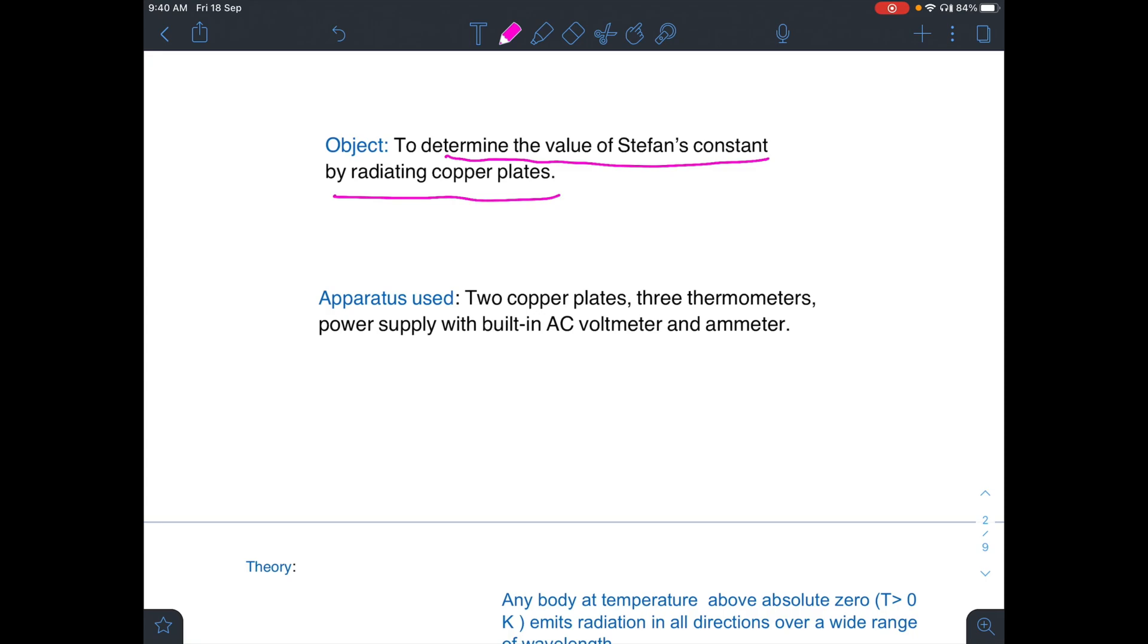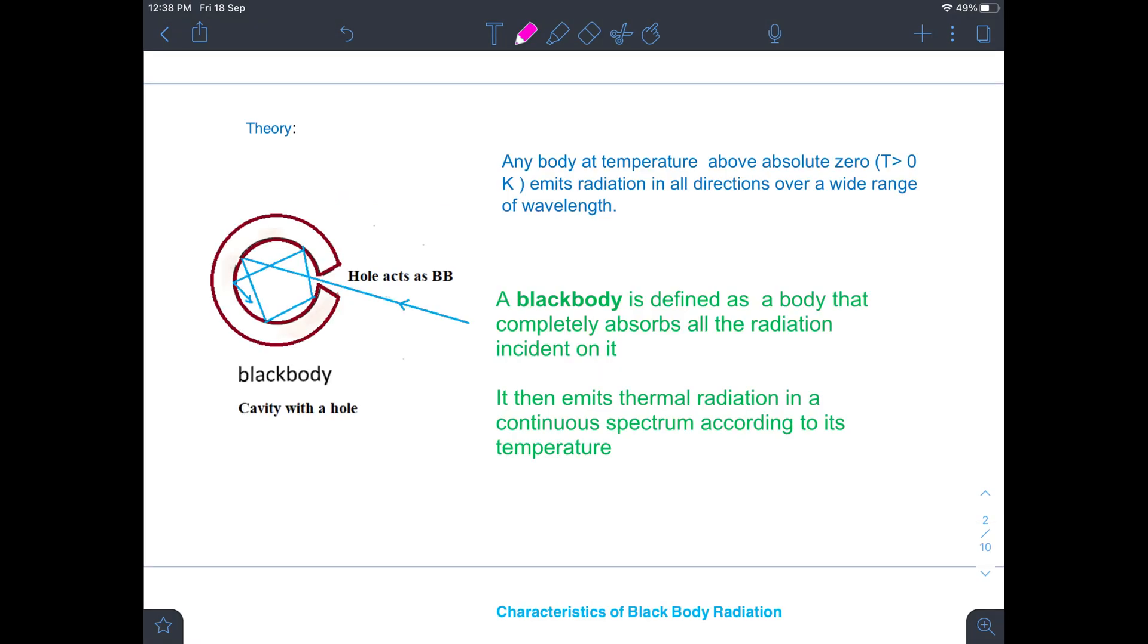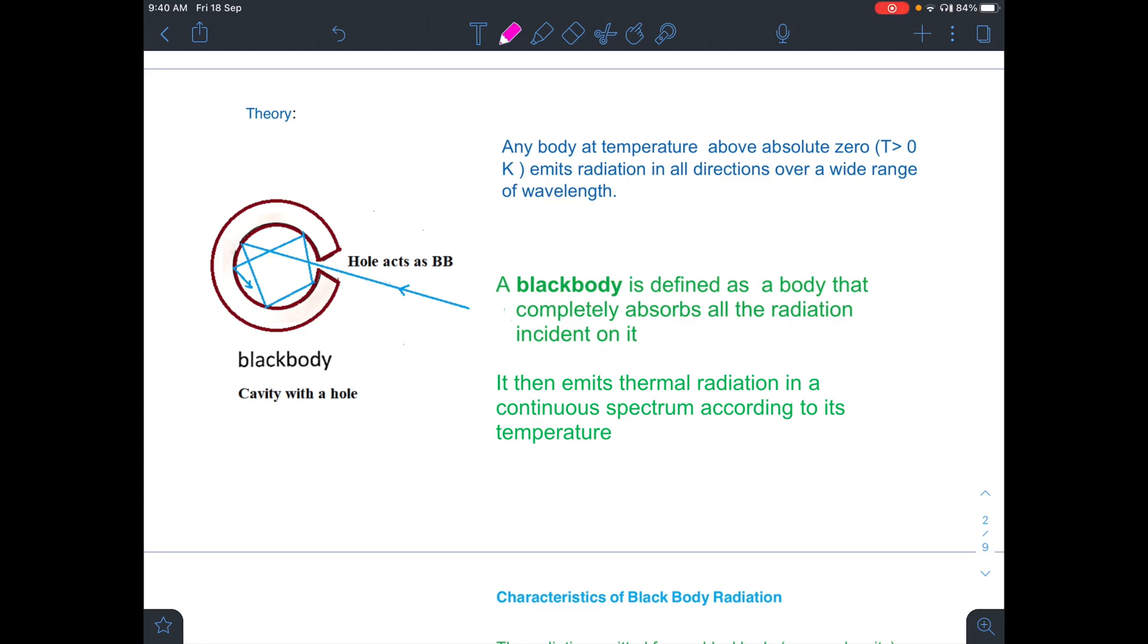The apparatus used will be two copper plates, three thermometers and a power supply which has built-in AC voltmeter and ammeter. Before going into the experimental details, let us first try to understand what a black body is and what is black body spectrum.